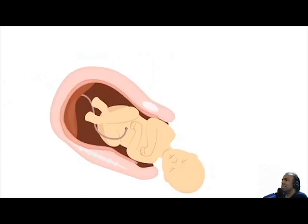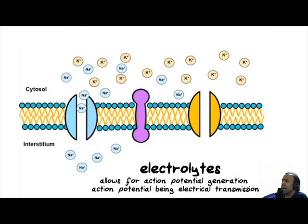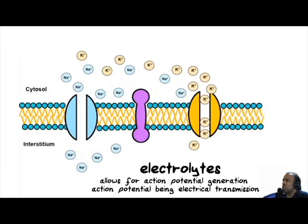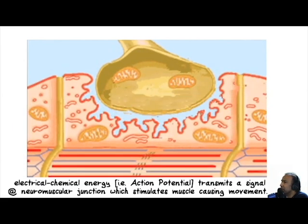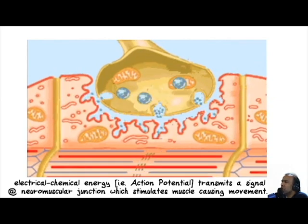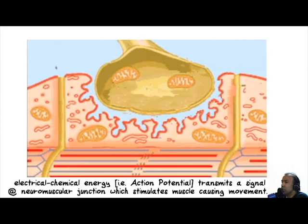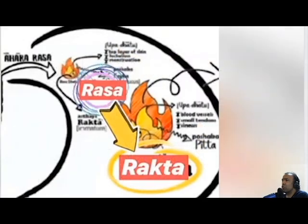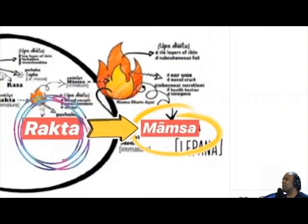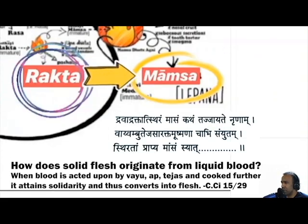From an Ayurvedic perspective, we can think of muscle cells or Mumsadatu as the organ which converts chemical energy — chemical energy being the electrolytes within blood — into mechanical energy of movement. Ayurveda explains that Dhatus are formed in a successive manner: Rakta is formed from the transformation of Rasa into Rakta, and Mumsadatu is formed from the transformation of Rakta into Mumsadatu.